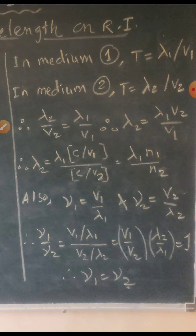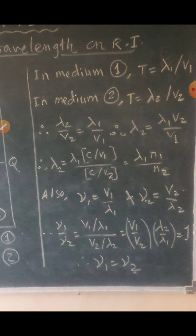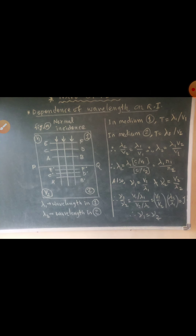It is clear that the frequency remains unchanged while going from one medium to another medium. But when light passes from one medium to another medium, its velocity and wavelength both change. And if the path of light is from rarer to denser, then the velocity and wavelength decrease. This is the dependence of wavelength on the refractive index of the medium. This was discussed with normal incidence, but the same discussion is also applicable for oblique incidence.